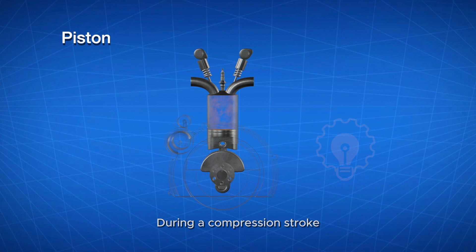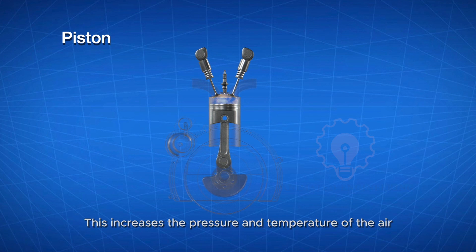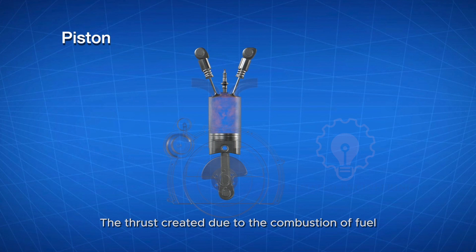During a compression stroke, the piston moves from the bottom dead center to the top dead center. This increases the pressure and temperature of the air-fuel mixture. Once the piston reaches the TDC, the spark plug ignites the mixture and produces energy. The thrust created due to the combustion of fuel pushes the piston to BDC.